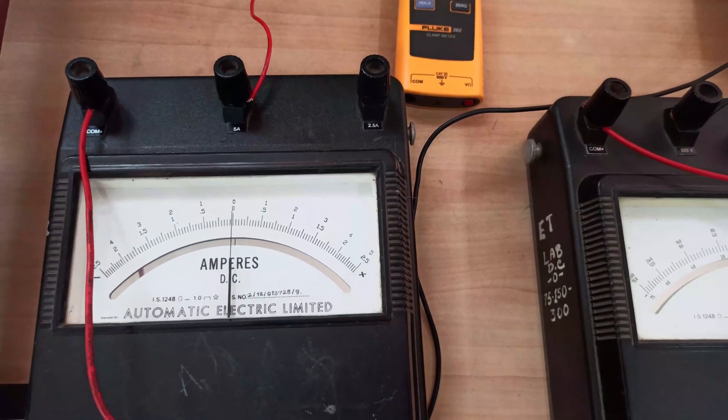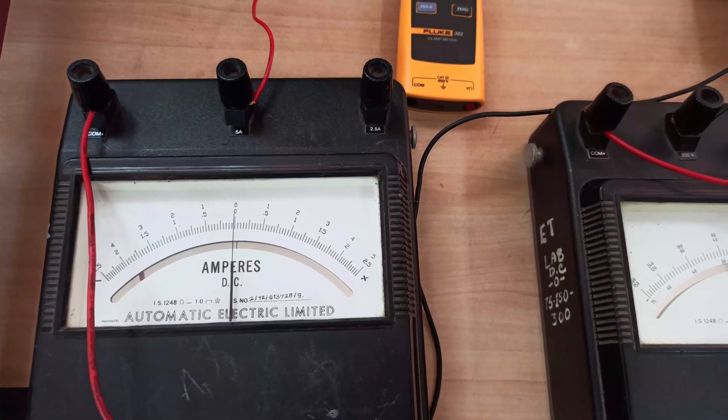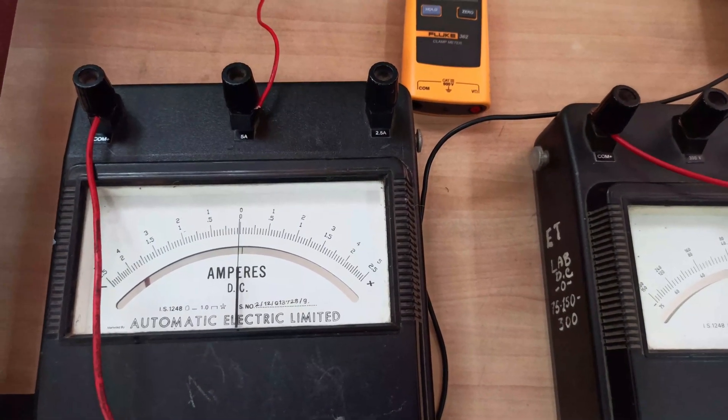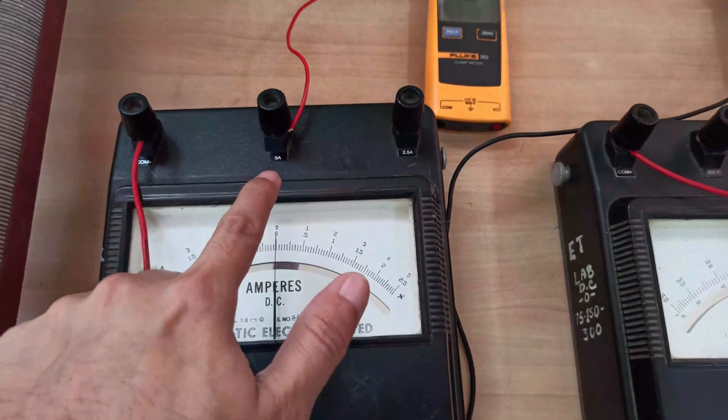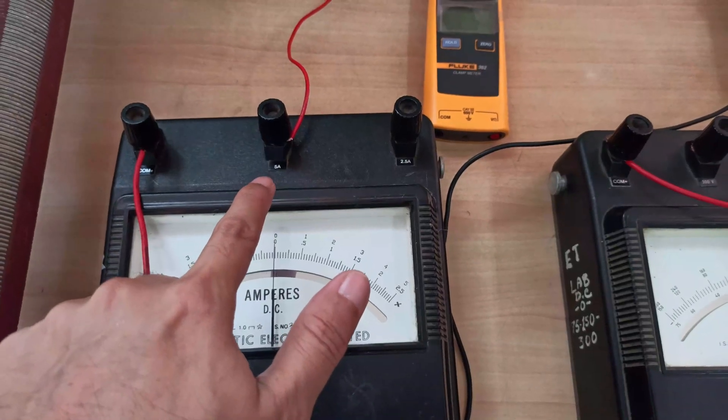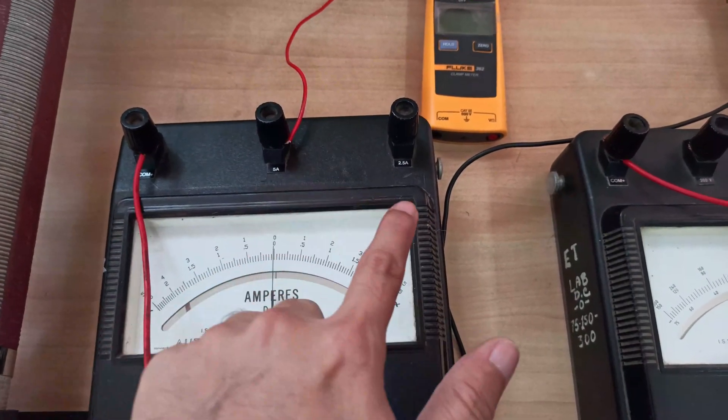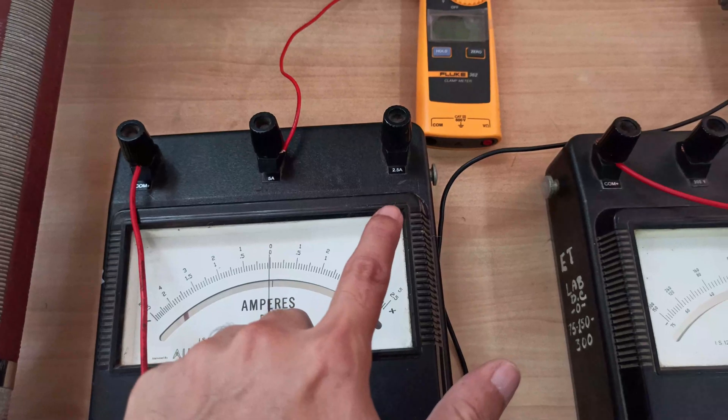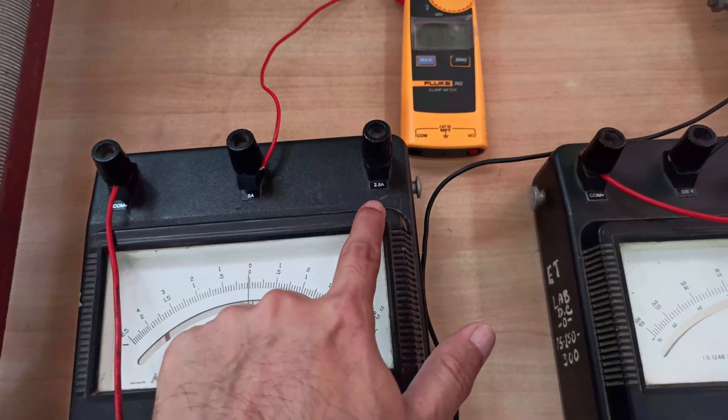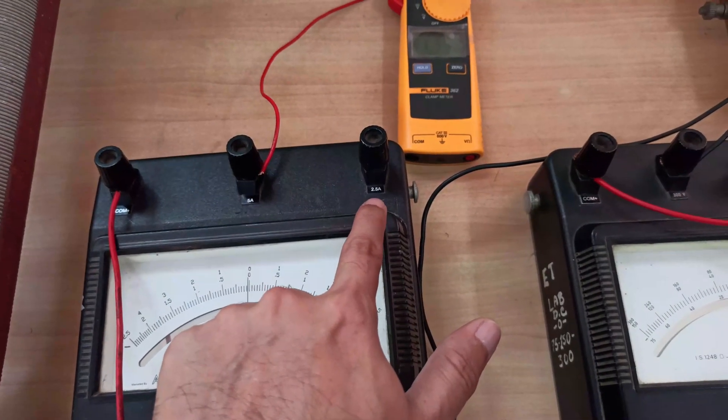For example, if you calculate that maximum current that is going to flow in your circuit is around 3 ampere, you will be selecting this 5 ampere scale. And if you are very sure that current will be within 0 to 2 ampere, then you use this 2.5 ampere scale.